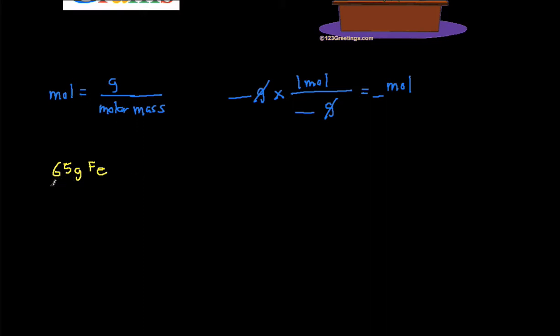For that, we just have to take the grams and divide it by the molar mass, which is 55.845 grams per mole.